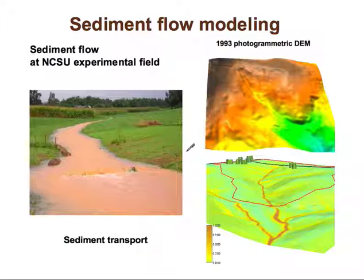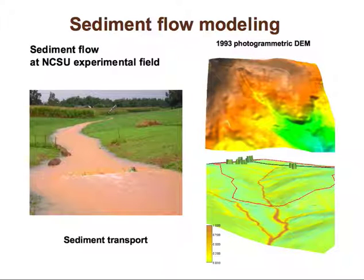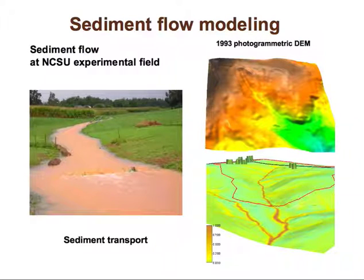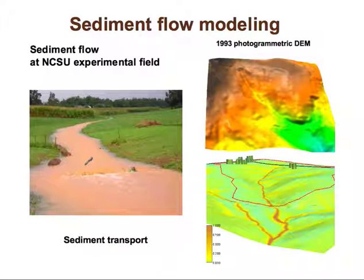In this last section of the lecture on erosion modeling, we will show some applications. Here is the area that you will be doing for an assignment. You can see that during large storms we have a lot of sediment coming out of this watershed, in spite of the fact that it is nicely covered by vegetation and corn fields. So we would like to find out where all this sediment is coming from.